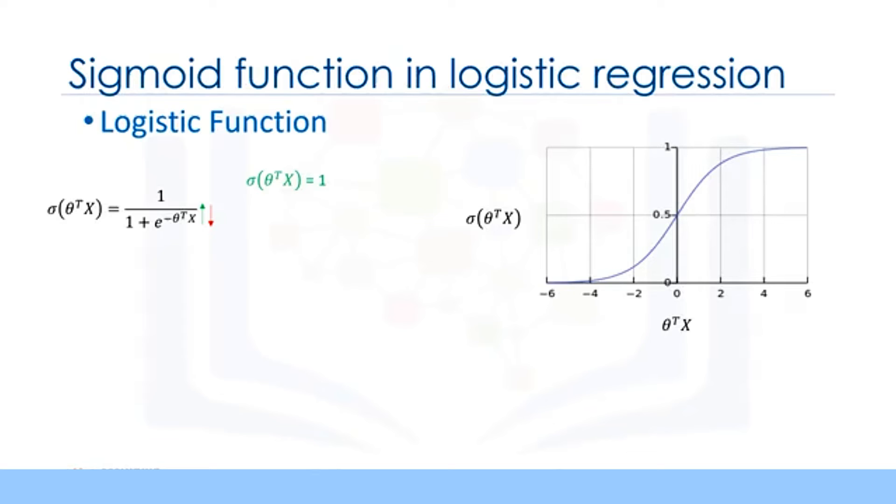Depicting on the sigmoid plot, when theta transpose x gets bigger, the value of the sigmoid function gets closer to 1. And also, if the theta transpose x is very small, the sigmoid function gets closer to 0. So, the sigmoid function's output is always between 0 and 1, which makes it proper to interpret the results as probabilities. It is obvious that when the outcome of the sigmoid function gets closer to 1, the probability of y equals 1, given x, goes up. And in contrast, when the sigmoid value is closer to 0, the probability of y equals 1, given x, is very small.